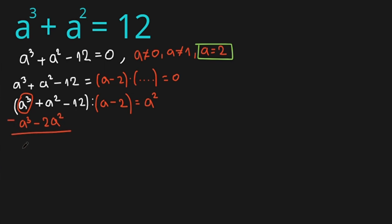Now I'm going to subtract: a cubed minus a cubed is 0, leaving us 3a squared minus 12. When we divide 3a squared by a, we get 3a. Multiplying 3a by (a minus 2) gives us 3a squared minus 6a.